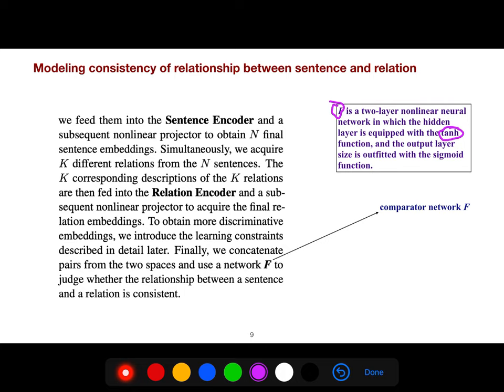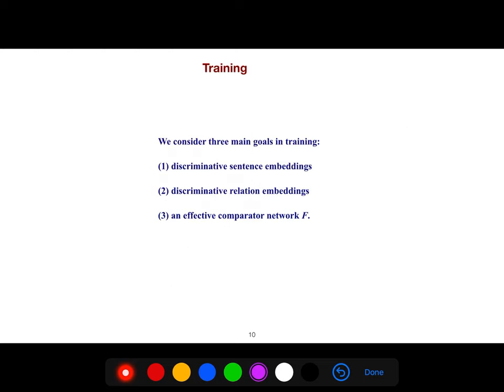So we feed them to the sentence encoder. And so relation, the k-corresponding descriptors of k-relations are fed into relation encoder and subsequent nonlinear projector. So they introduce the learning constraint and they concatenate pairs from two spaces and use that comparator to judge whether the relation between a sentence and relation is consistent.